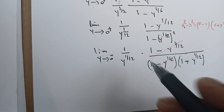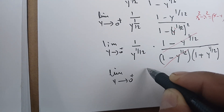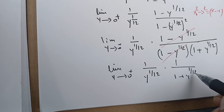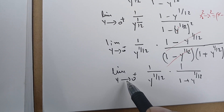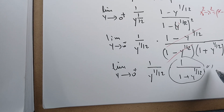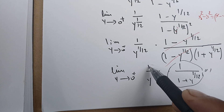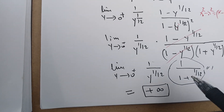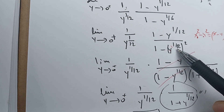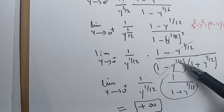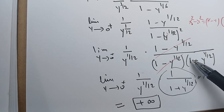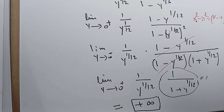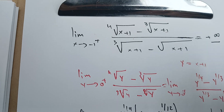After cancellation, we're left with the limit as y→0⁺ of (1 / y^(1/12)) times (1 / (1 + y^(1/12))). As y→0⁺, the second factor goes to 1, and the first factor is 1 over 0⁺, which goes to plus infinity. Therefore the limit is plus infinity.